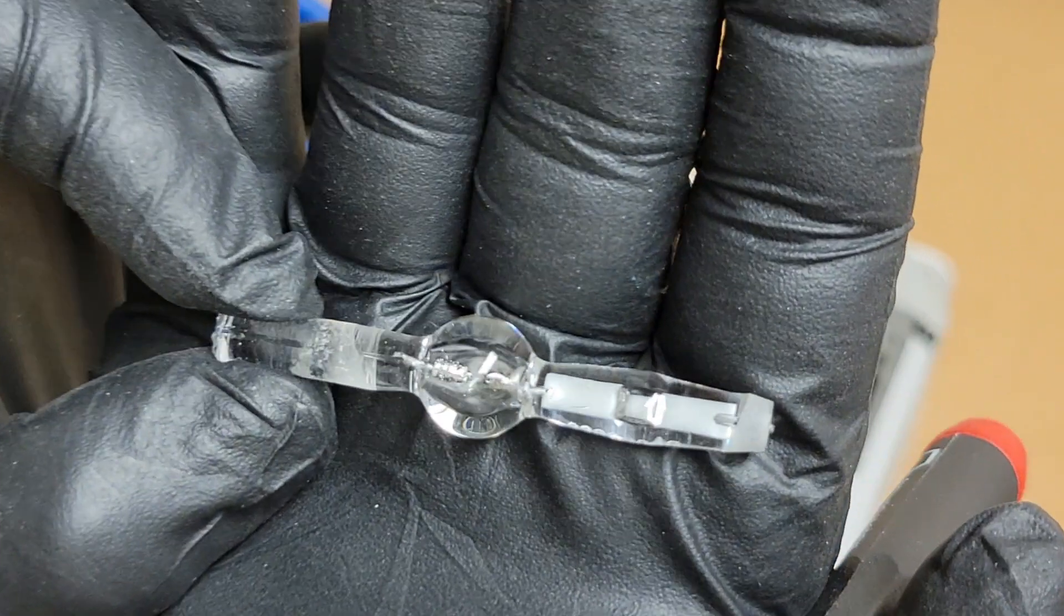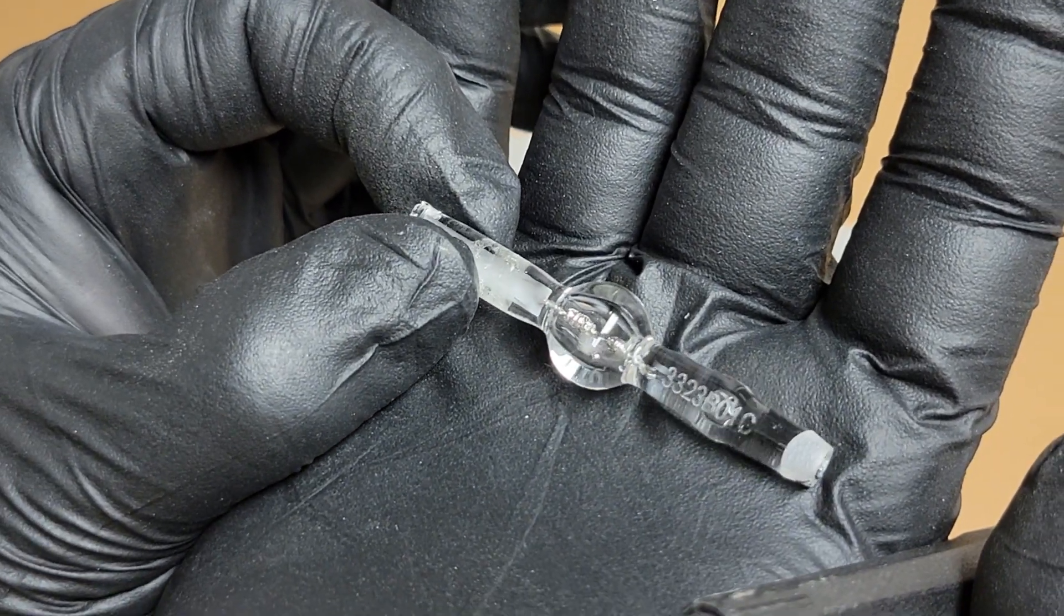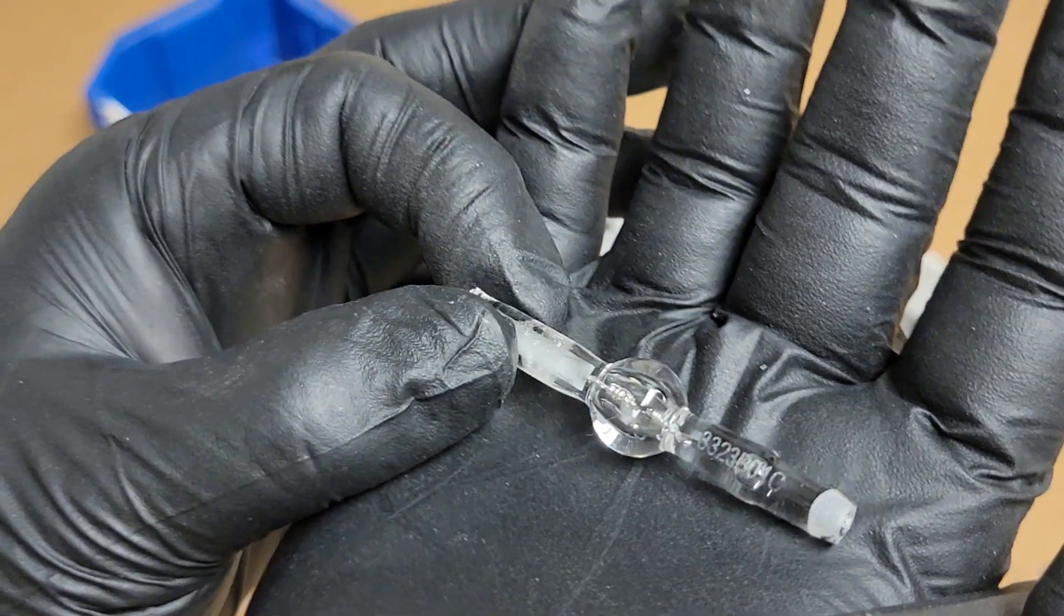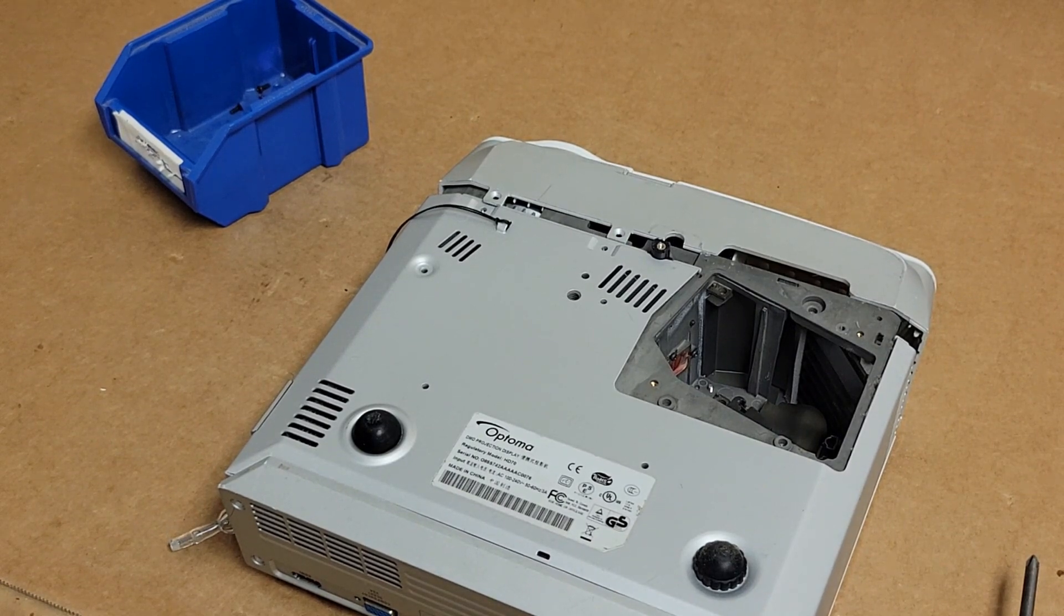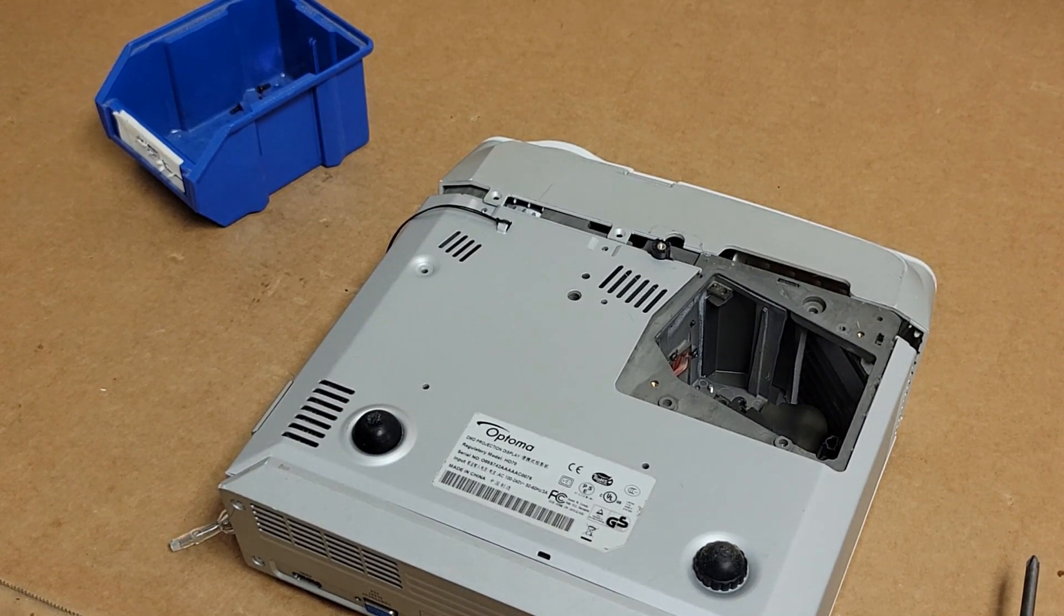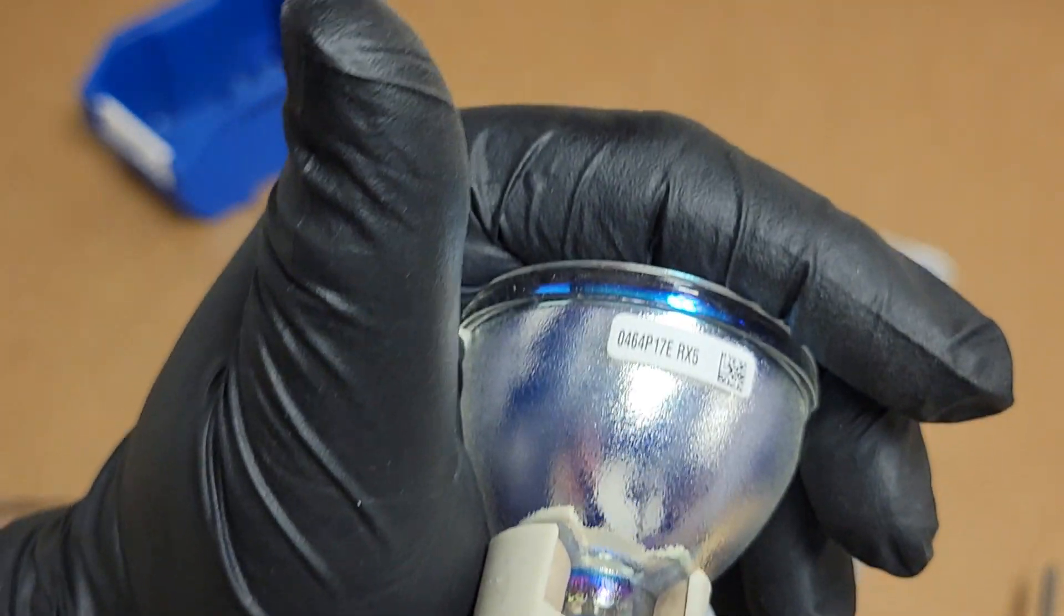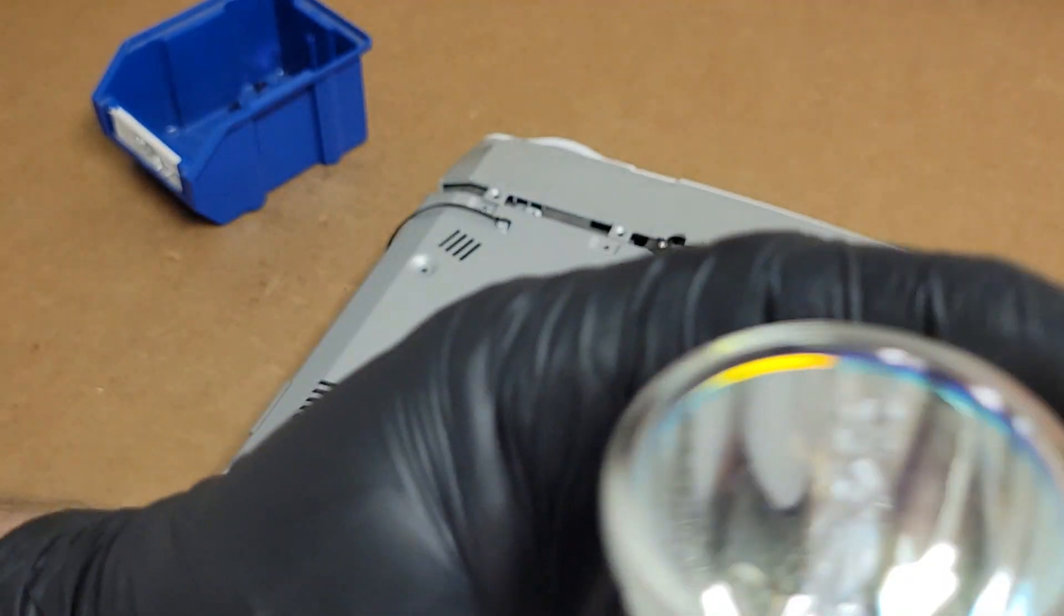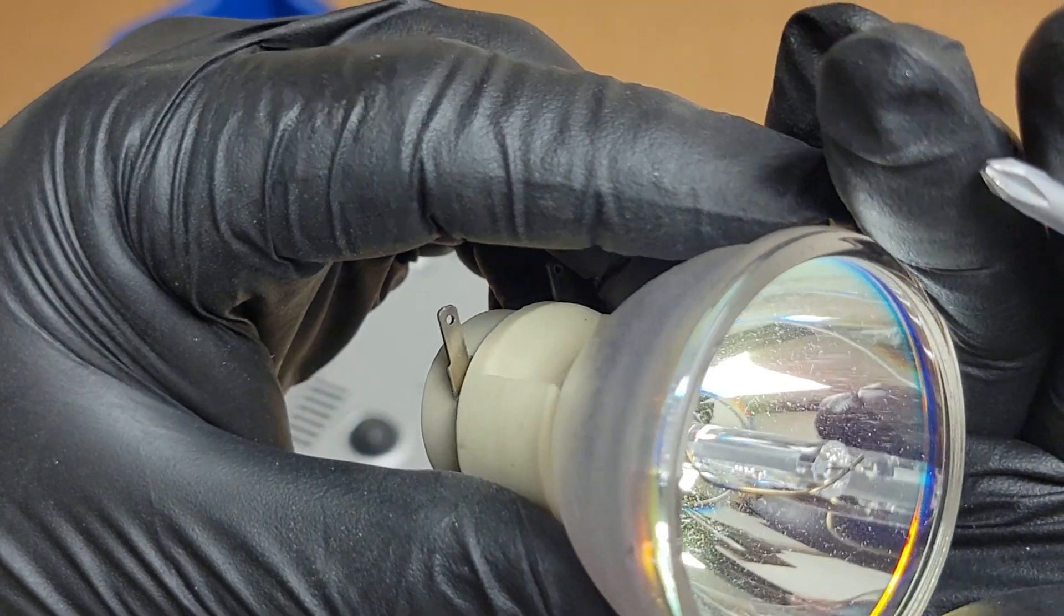Here's a little bigger arc tube or burner. Sometimes they're called burners. You can see that has a serial number on the side there. One way to tell if your lamp is counterfeit or not, especially if it's an Osram, is this number here, at least part of it, should correspond to the side of the arc tube.